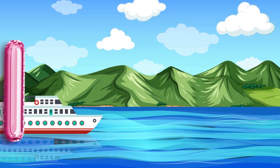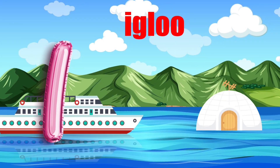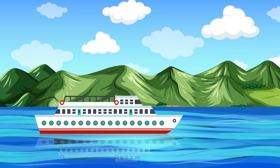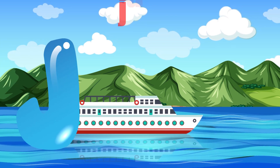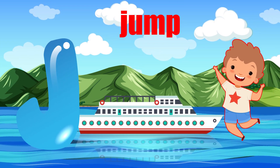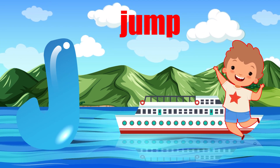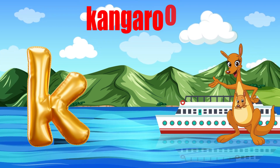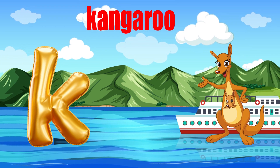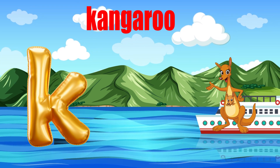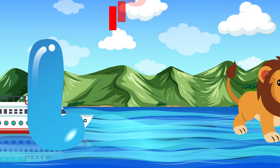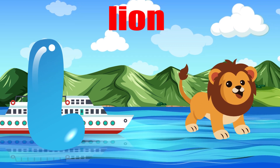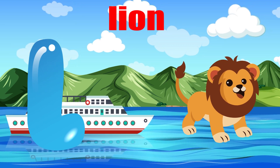I is for igloo, i-i-igloo. J is for jump, j-j-jump. K is for kangaroo, k-k-kangaroo. L is for lion, l-l-lion.